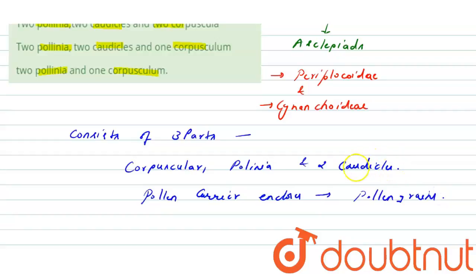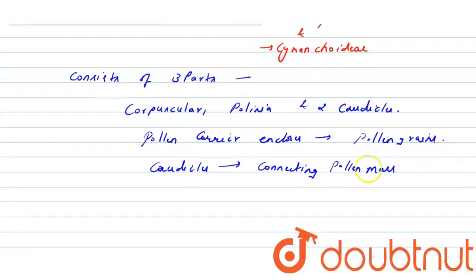Corticles are connective to attach the pollen mass. Corticles are responsible for connecting, for connecting the pollen mass with the corpuscular.